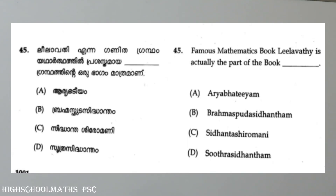The following is the last question. The famous mathematics book — the last question is actually part of the book. Option A is the first; Option B is Brahma Spuda Siddhantam; Option C is Siddhantashiromani; Option D is Sutrasiddhantam.